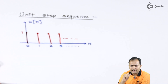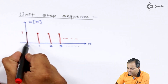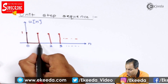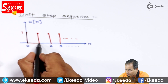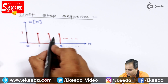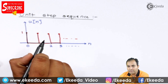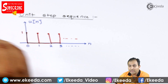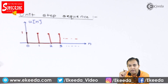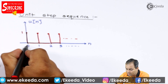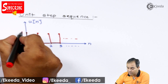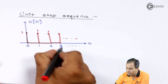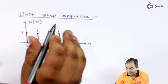Between any two instances the amplitude is 0. For example, between 0 and 1 the graph amplitude is 0. Similarly, between 1 and 2 the graph is 0, and between 2 and 3 the graph is 0. The amplitude is available only at particular instances of time: at n=0 the amplitude is 1, at n=1 the amplitude is 1, at n=2 the amplitude is 1, and at n=3 the amplitude is 1.